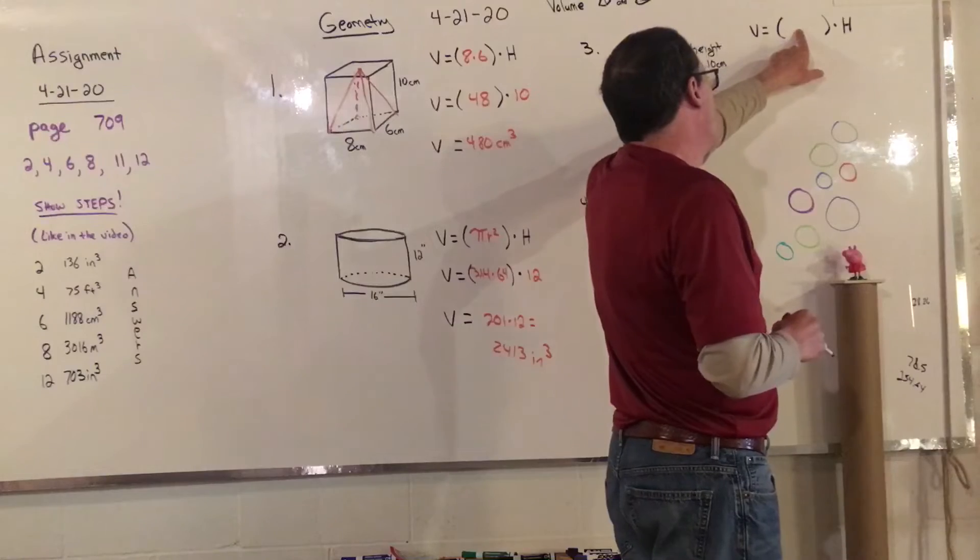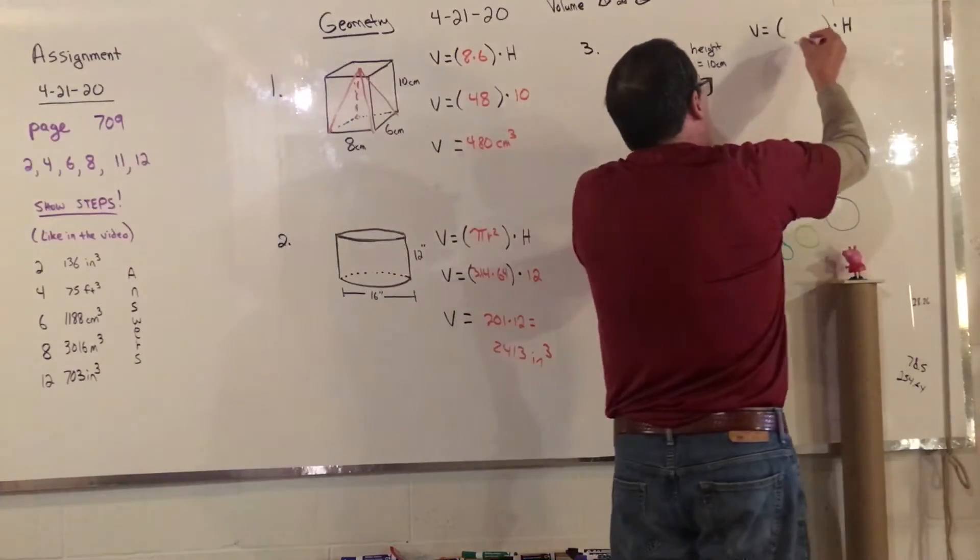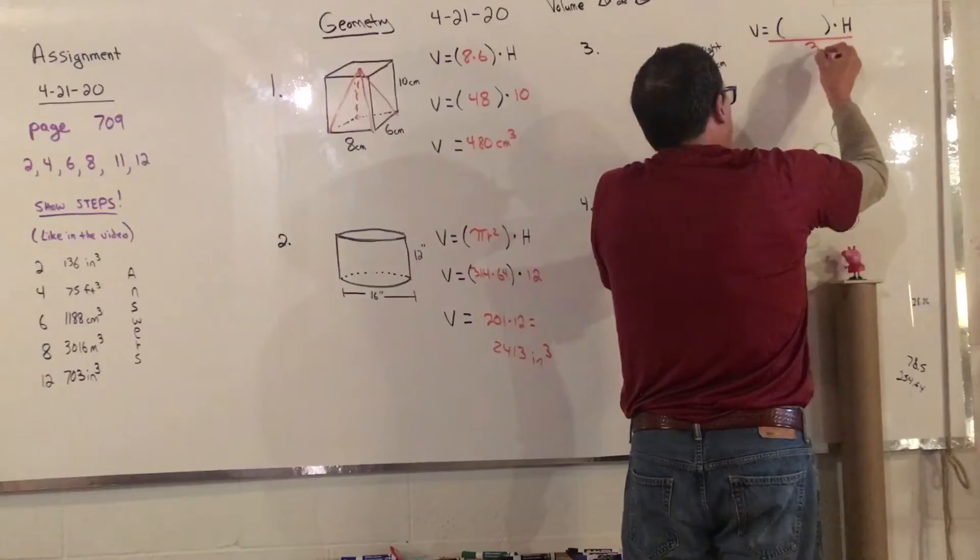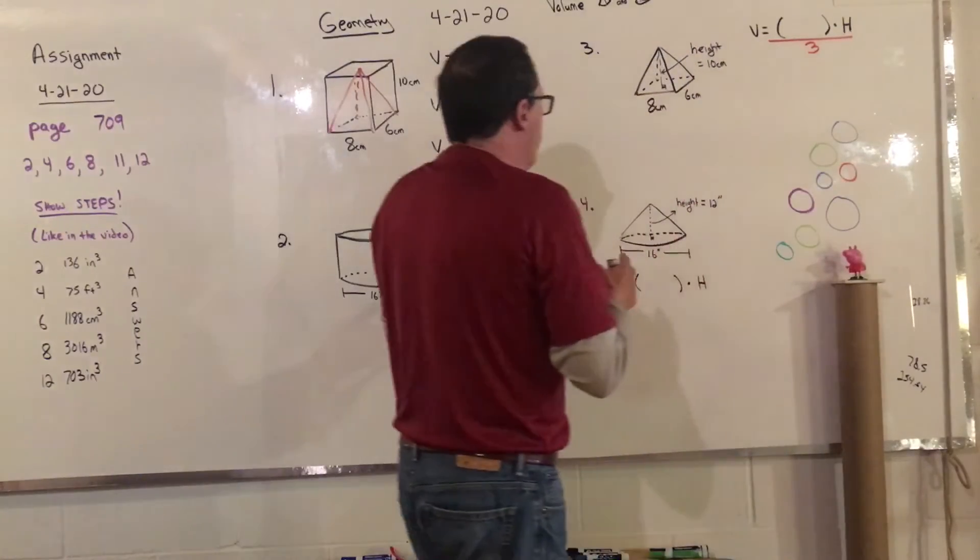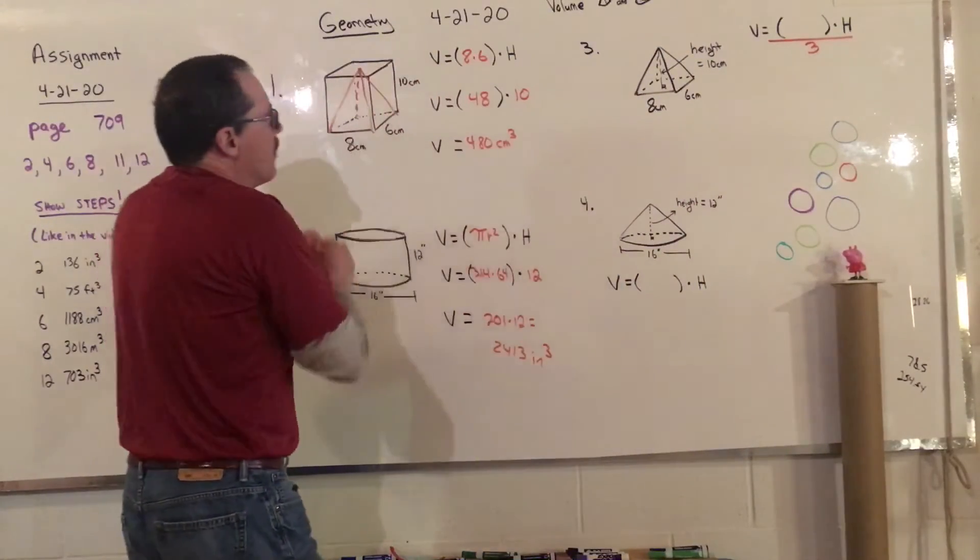So the thing stays the same. The volume equals the area of the base times the height. But what you have to do is you have to divide the whole thing by 3. And that's for a pyramid.